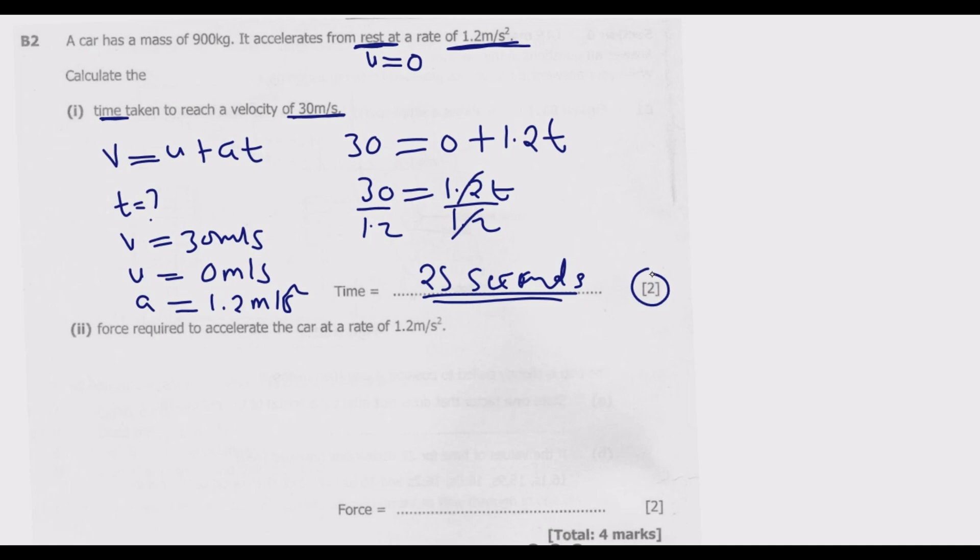When I talk about acceleration, we are saying it is the rate of change of velocity per unit time. That's why you have acceleration as a equals change in velocity, which is final velocity minus initial velocity over time.